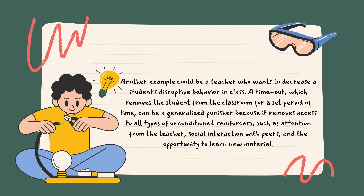In summary, unconditioned reinforcers and punishers are natural stimuli that produce positive or negative responses, while conditioned reinforcers and punishers are learned through association with unconditioned stimuli. Generalized reinforcers and punishers have been associated with multiple unconditioned stimuli and can therefore be used to reinforce or punish a variety of behaviors.